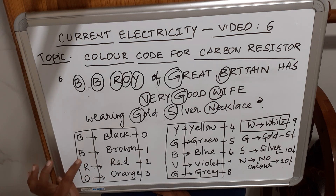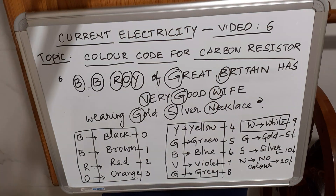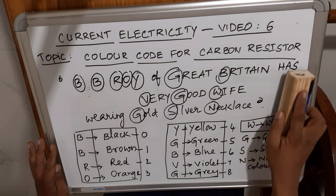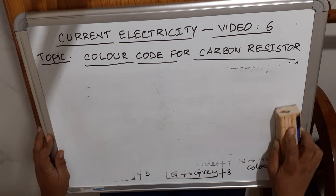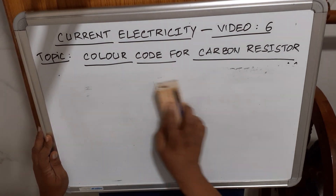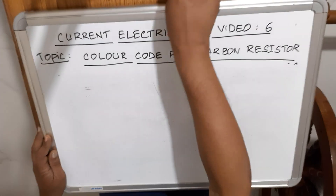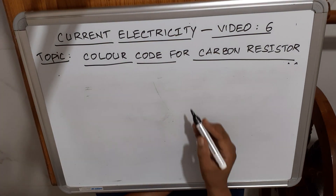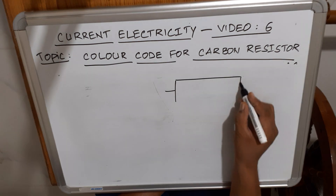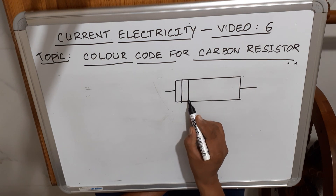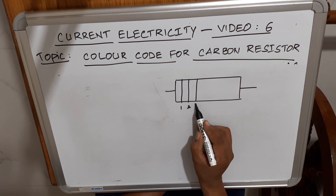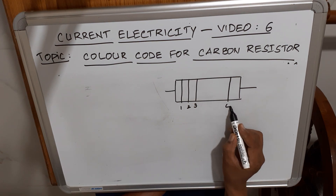Now let us see how to use this technique to find the resistance of a carbon resistor with a printed color sequence. The resistor has one strip, a second strip, a third strip — three colors on one side — and a fourth color on the other side.